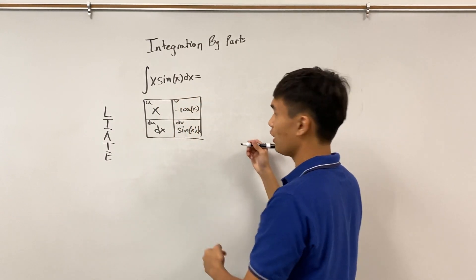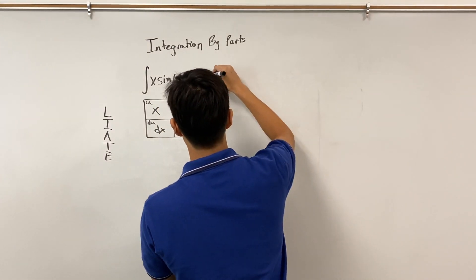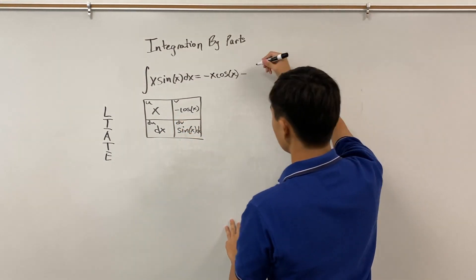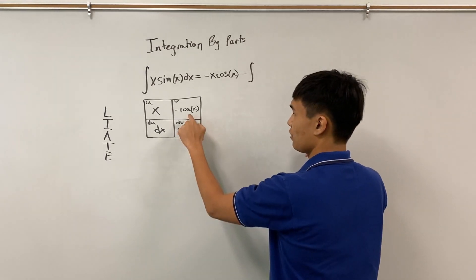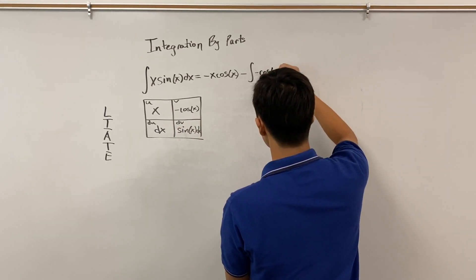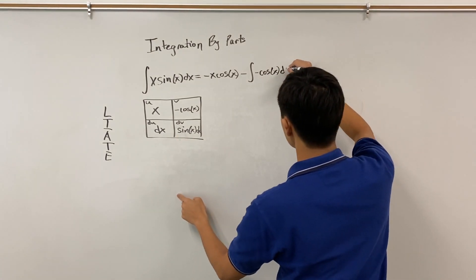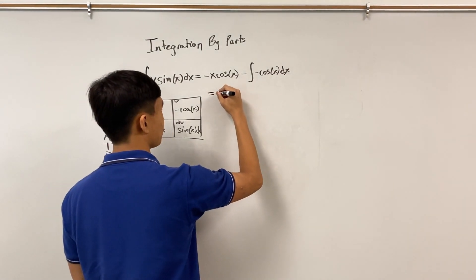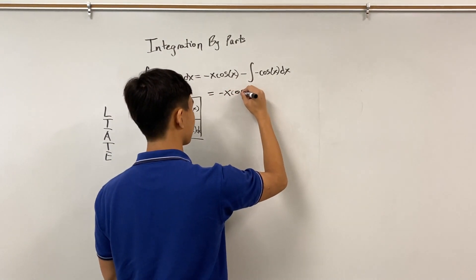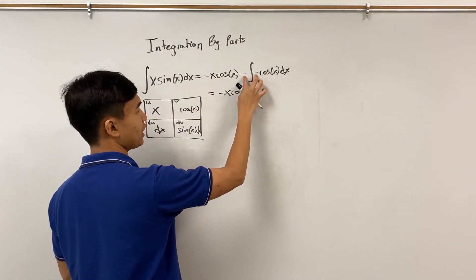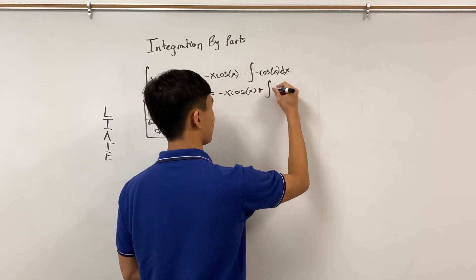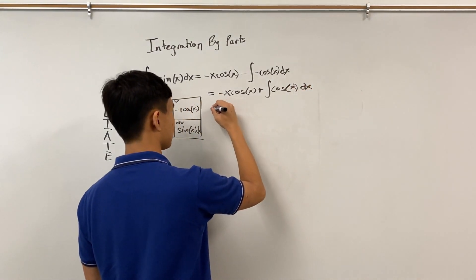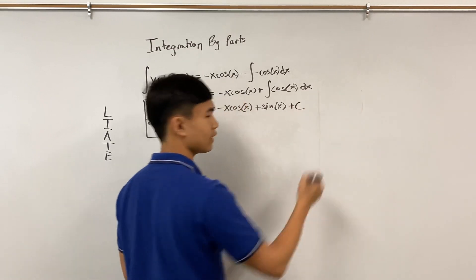We have uv, which is negative x cos(x), minus the integral of v du. So bringing down negative x cos(x), notice the two negatives cancel to make a plus, giving us plus the integral of cos(x), which is sin(x). Now we add our plus C at the end.